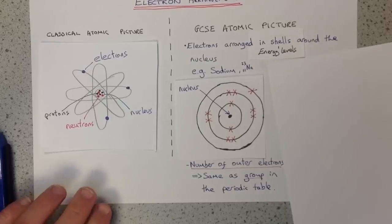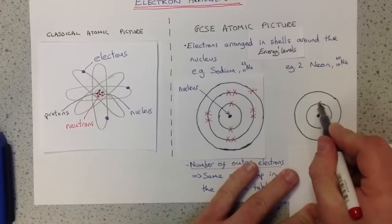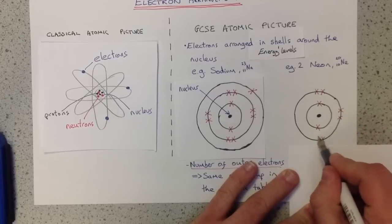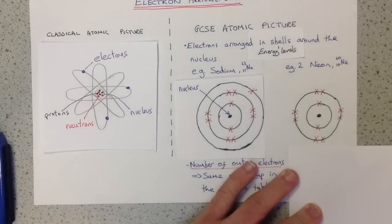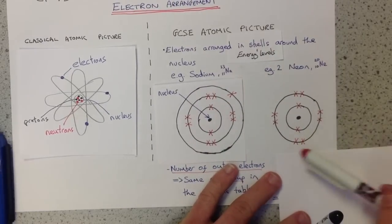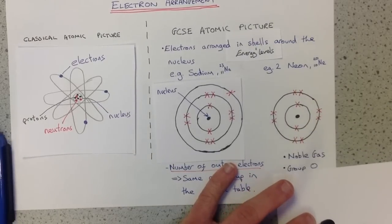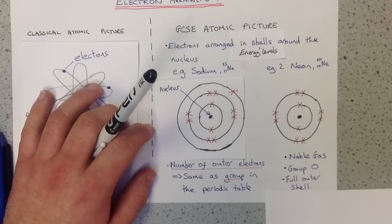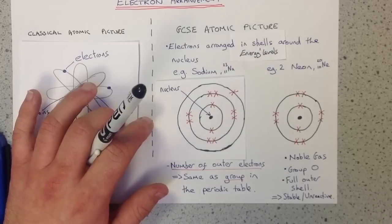The same applies for all elements. Let's look at example number 2, which will be neon. Neon is element number 10, one before sodium. Again, our nucleus in the centre: our first shell takes 2 electrons, and our second shell for neon takes 8, giving 2 plus 8 equals 10 — that's the entire amount of electrons that neon has, 10 electrons. A full outer shell — the most electrons the second shell can take is 8. Neon is a noble gas; it sits in group 0 of the periodic table on the far right-hand side. It has a full outer shell, and this full outer shell makes it very, very stable and very unreactive.